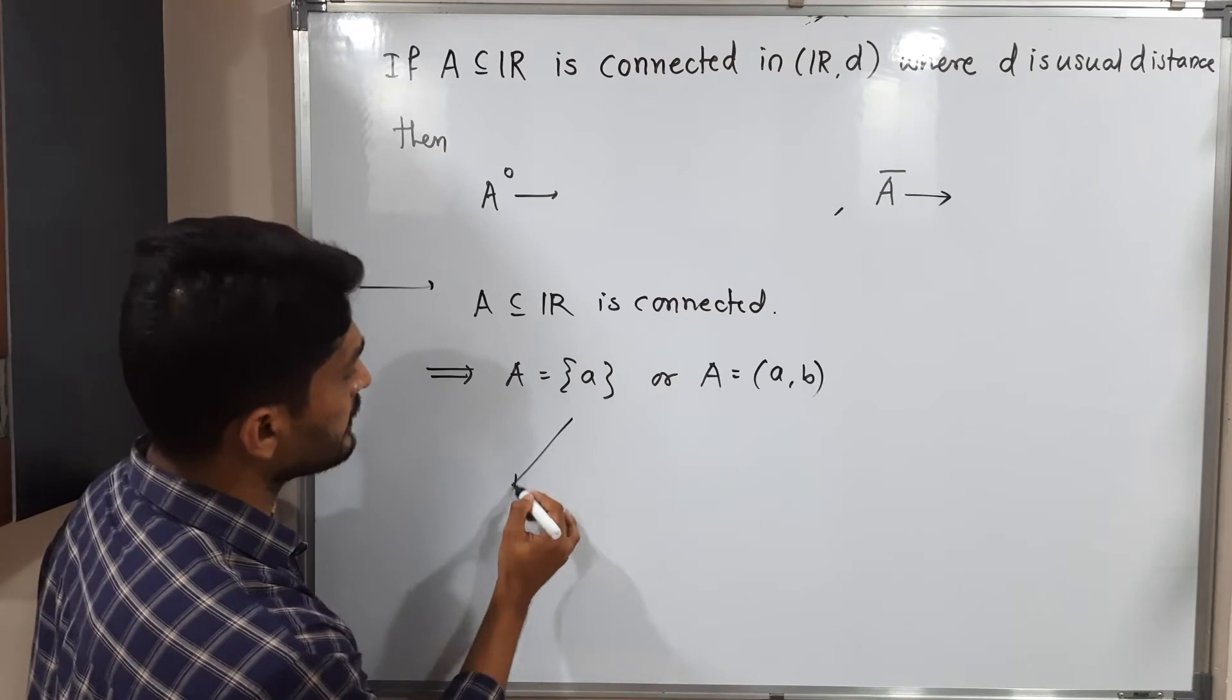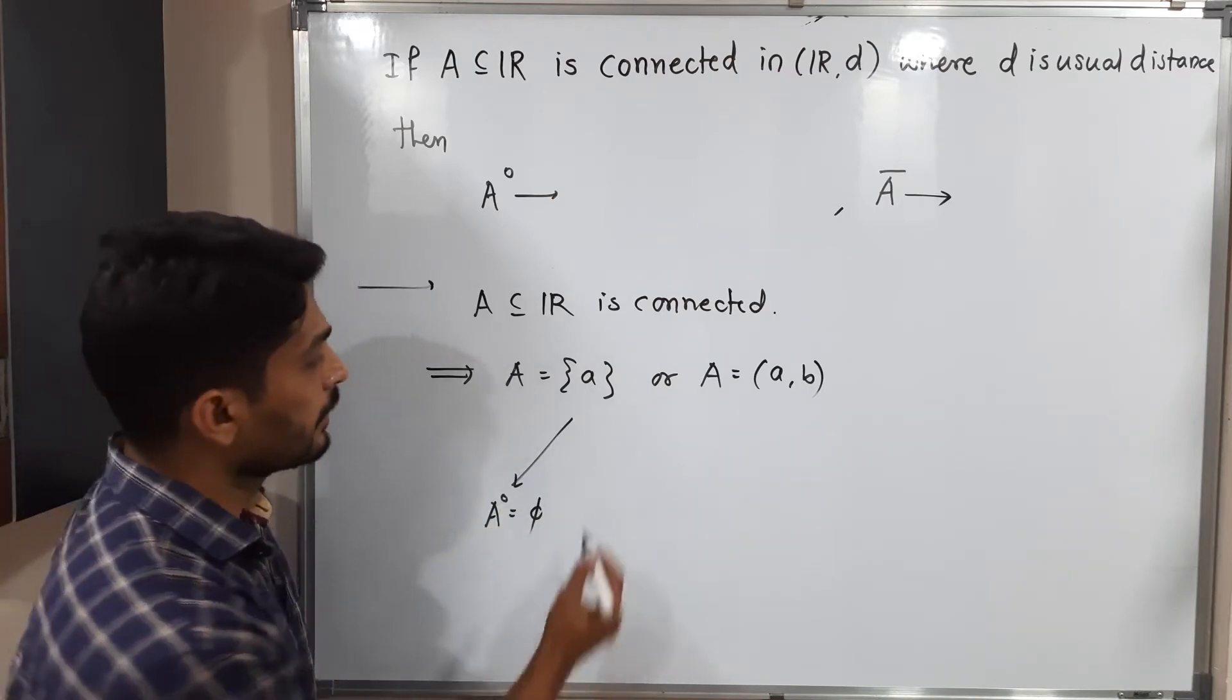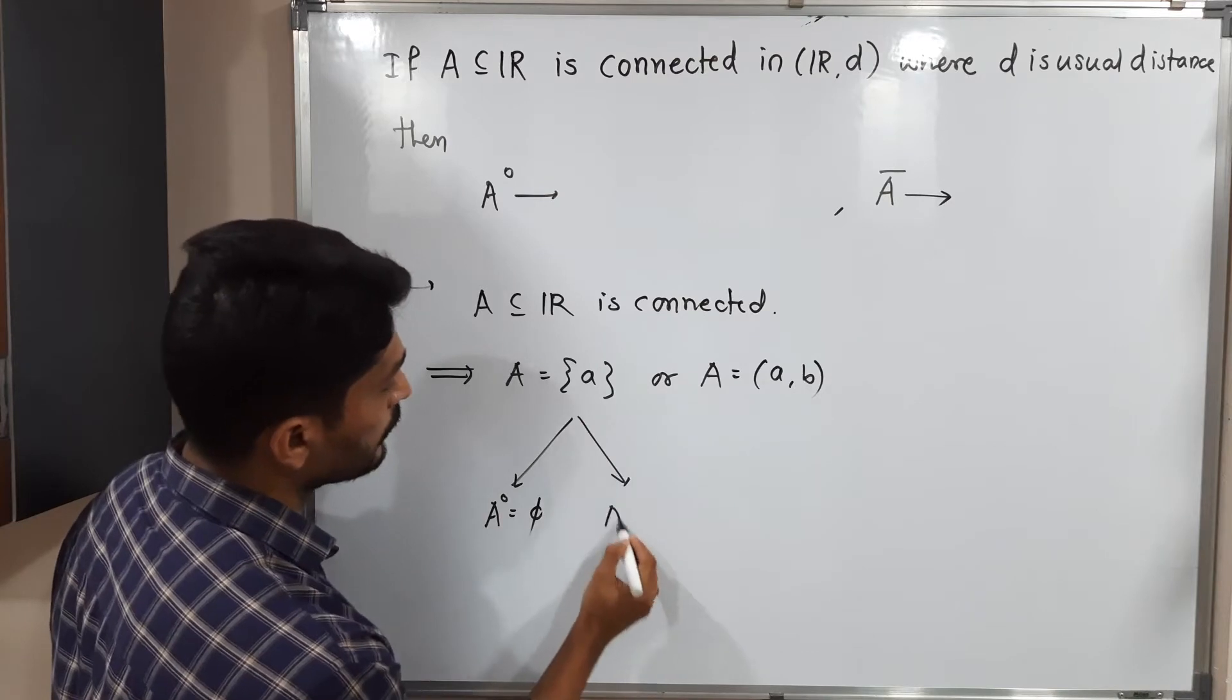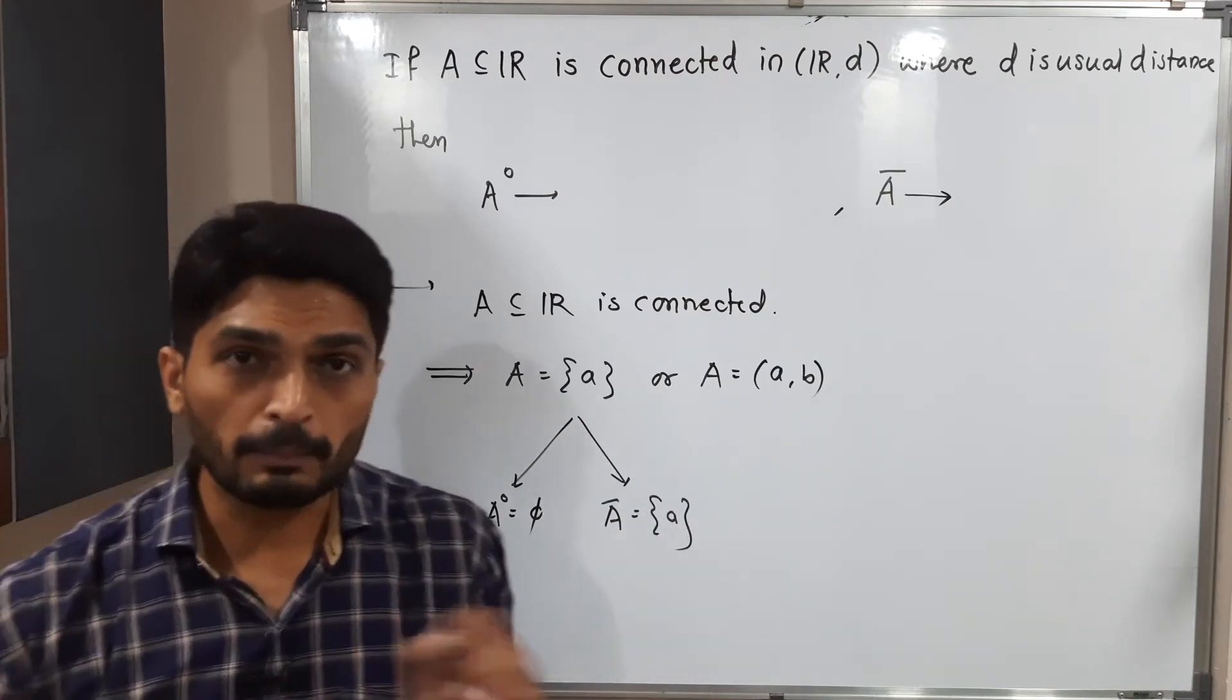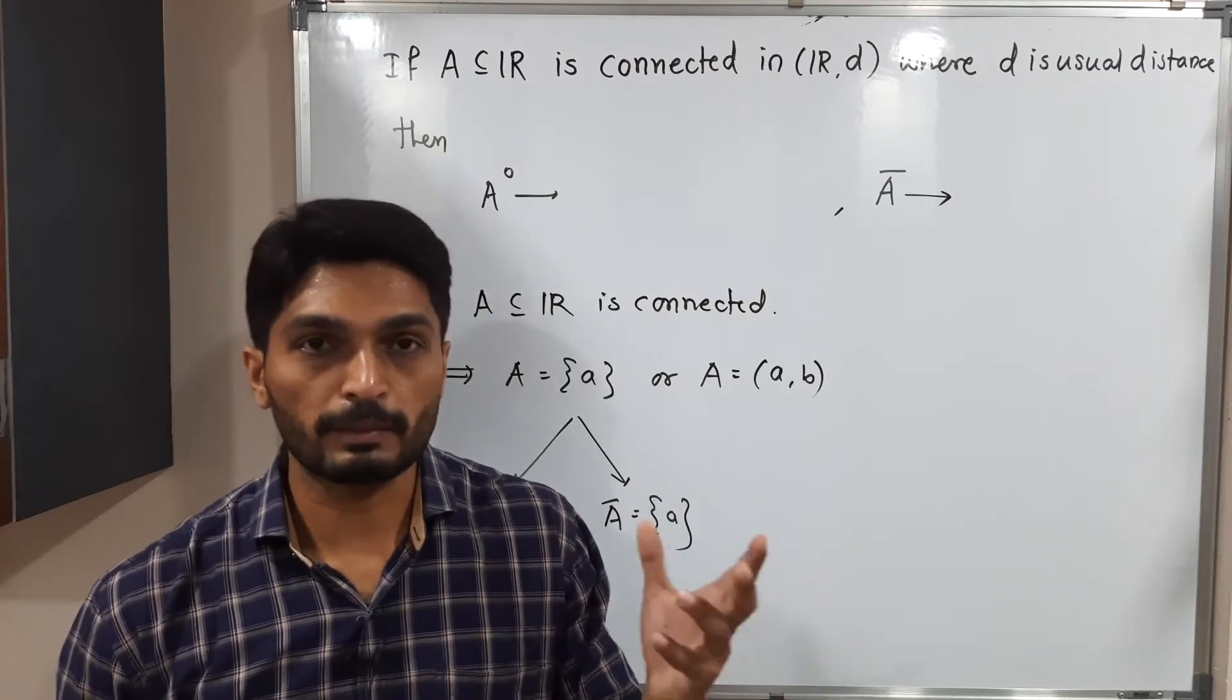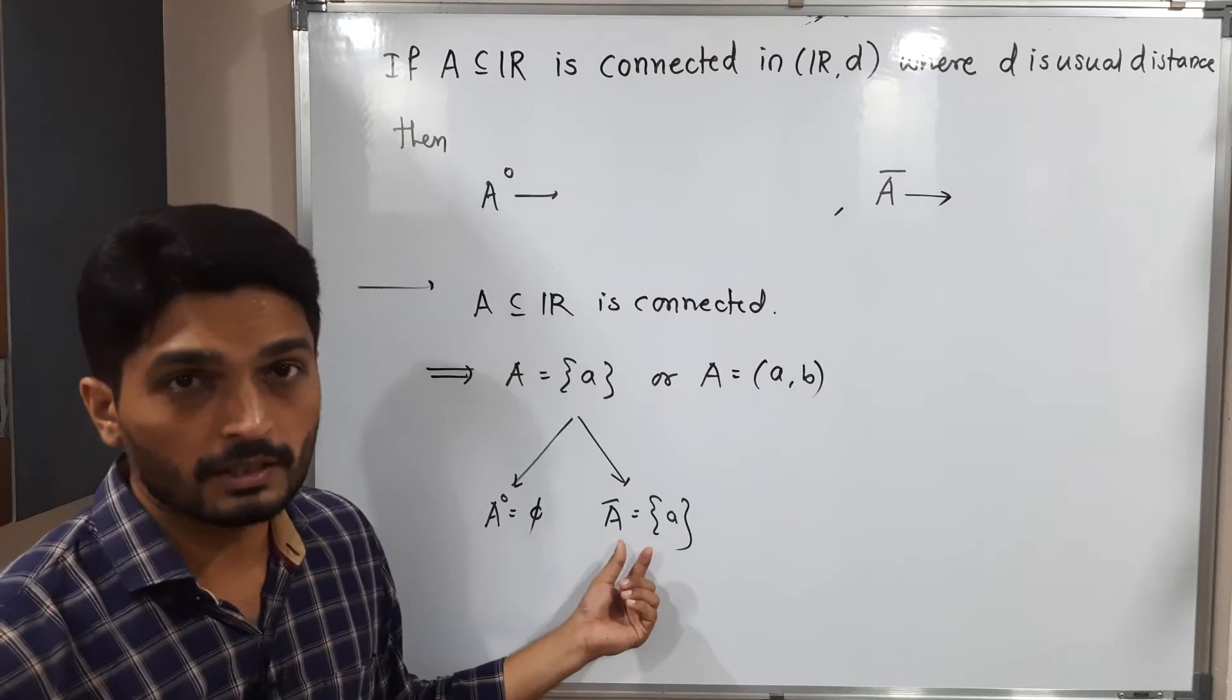See, if A is a singleton set, then its interior will be φ (phi), and its closure will be singleton A. You know that A̅ is equal to A union A' (set of limit points) is φ, A is itself, so that's why A̅ is equal to singleton A.